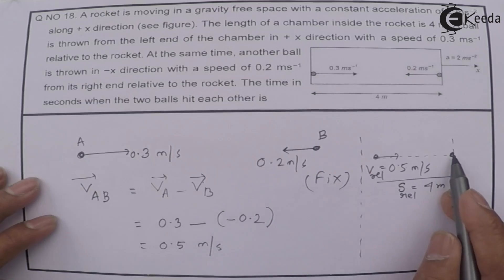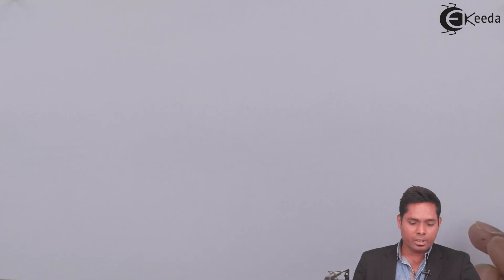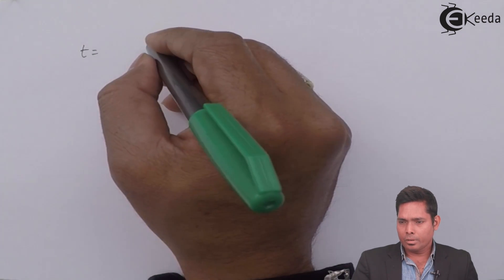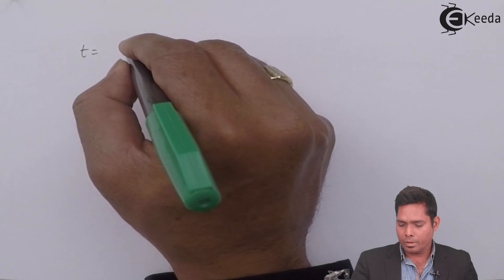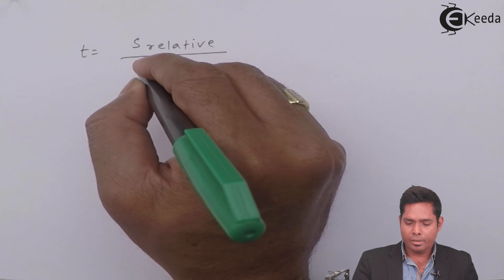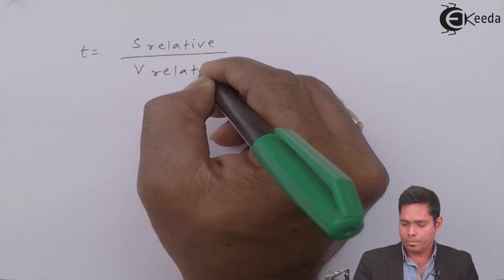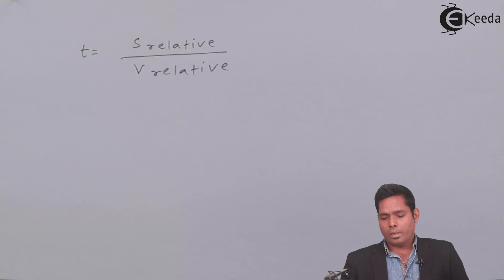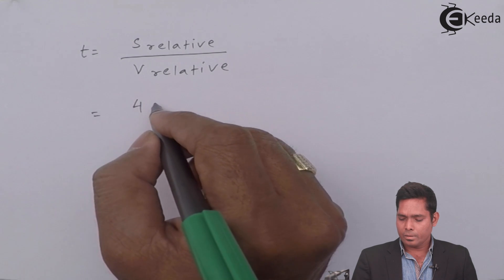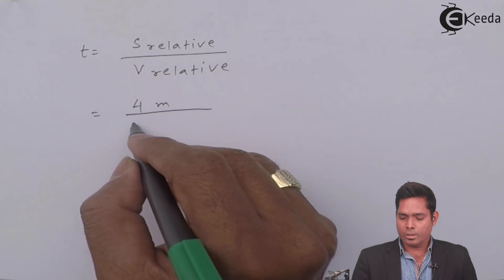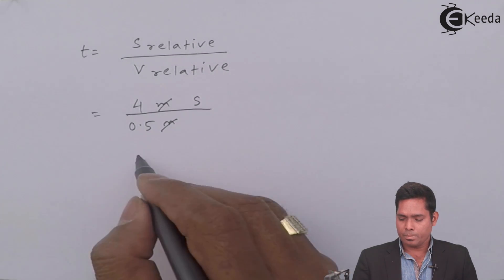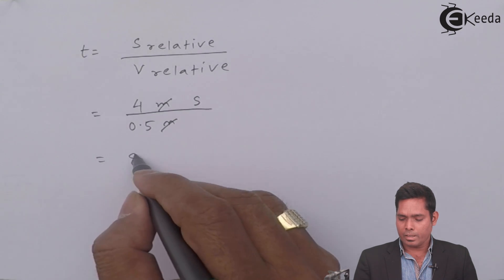So the time equals displacement divided by relative velocity, which is 4 divided by 0.5. Meter cancels, giving the answer in seconds. So this is 8 seconds.